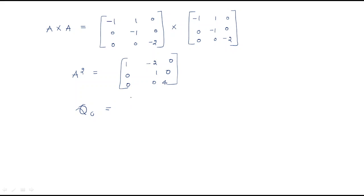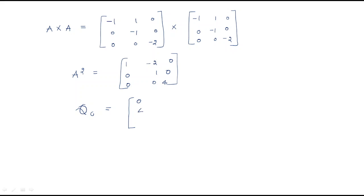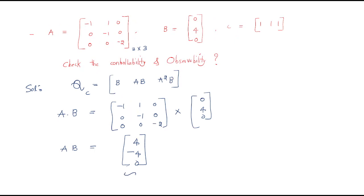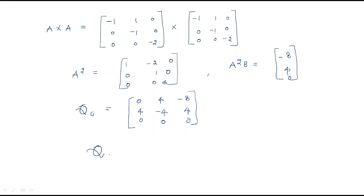Now we assemble the QC matrix. B = [0; 4; 0], AB = [4; -4; 0], and A²B = [-8; 4; 0]. Substituting these values, if you compute the determinant of QC you will find it equals 0.